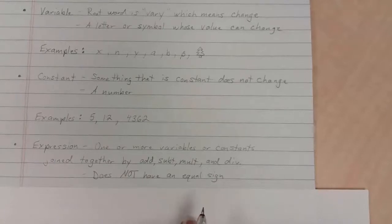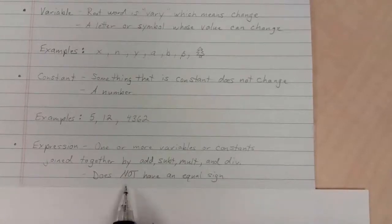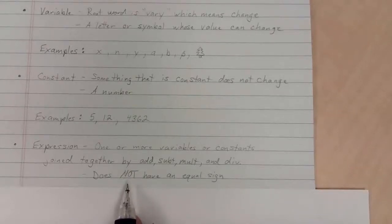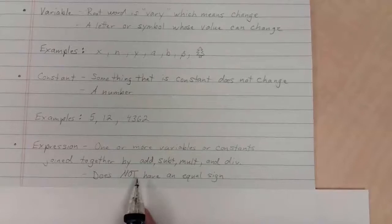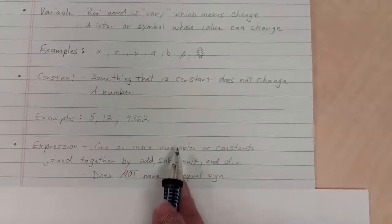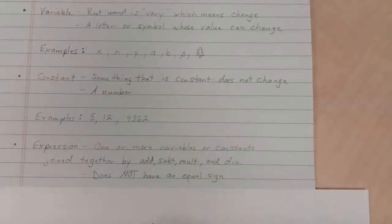One thing I'd like to point out is that an expression does not have an equal sign in it. There's another e-word that does have equal signs — that's going to be an equation. If you'd like to jot that down, you can. We will talk about that again some other time. But an expression does not have an equal sign. It's just a collection of variables or constants, and we can join them together by adding, subtracting, multiplying, and dividing.